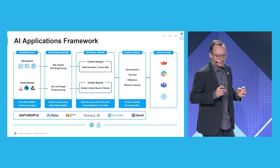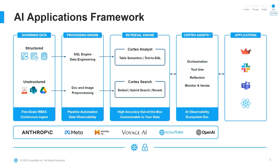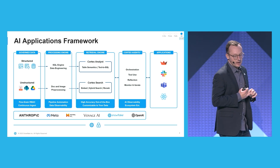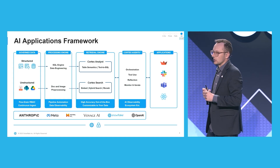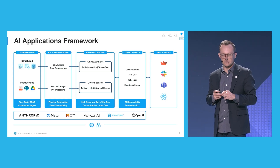Over the last 12 to 24 months, we introduced our concept of the AI Applications Framework. It starts with governed data on the left — it's our SQL processing engine for highly structured data that you know so much about with tools like Snowpark. Most importantly now it's about retrieval, and we're going to dive into this further with Cortex Analyst. On the unstructured side, it's about processing unstructured documents from different storage locations, utilizing tools like Cortex Search for high-quality hybrid retrieval, and then agentic orchestration across all of these applications.